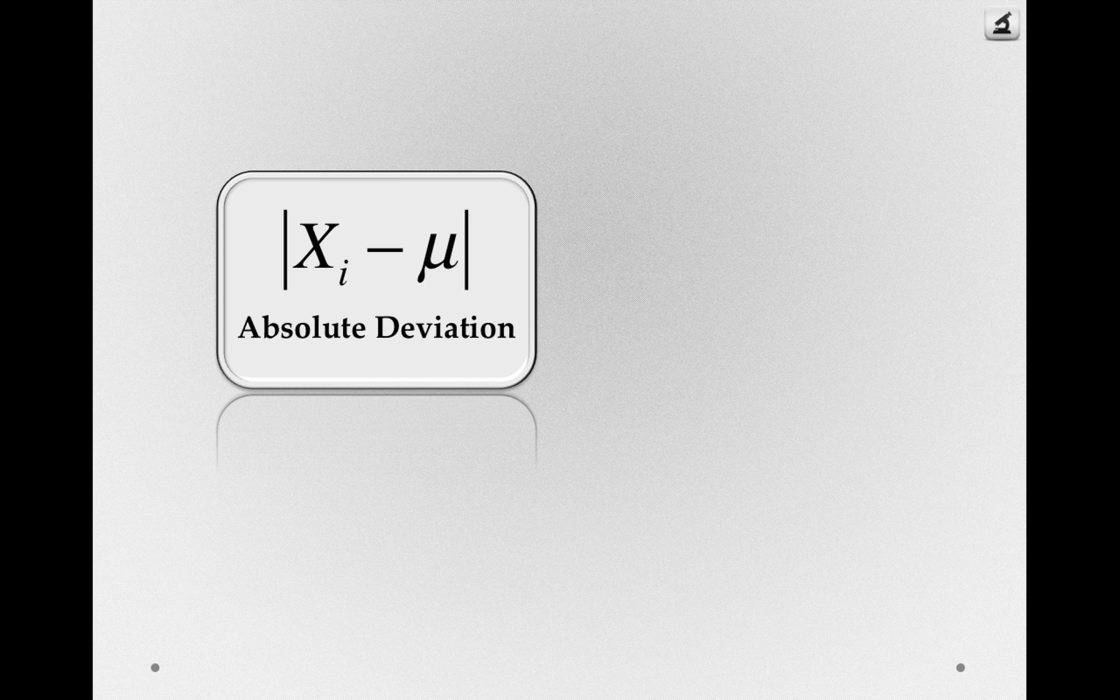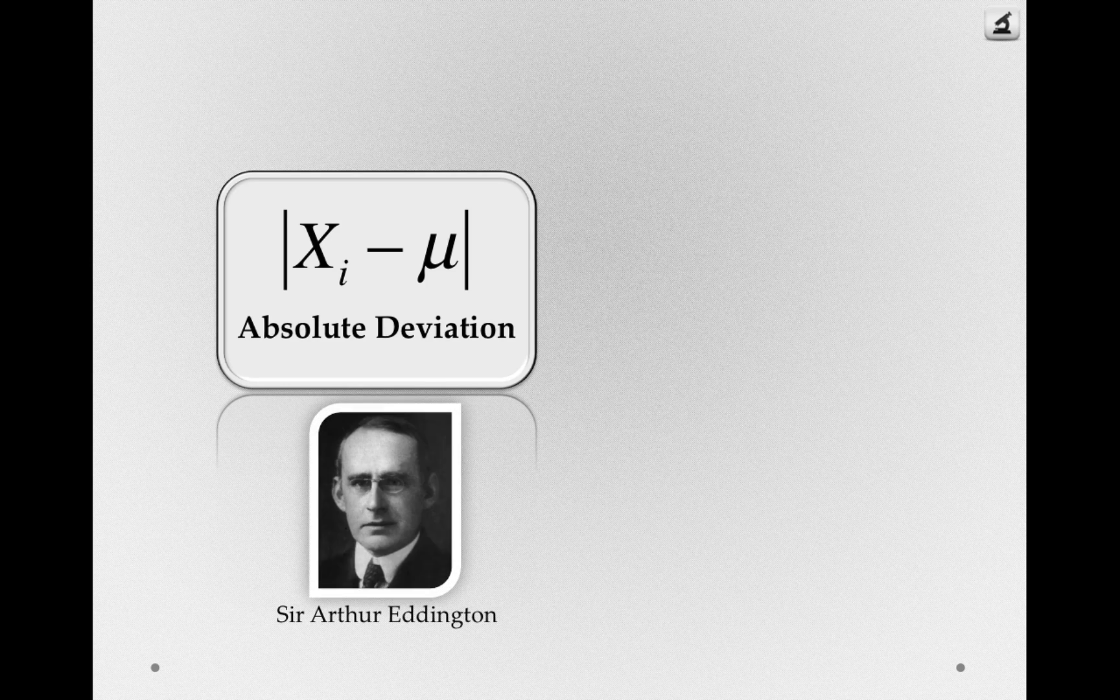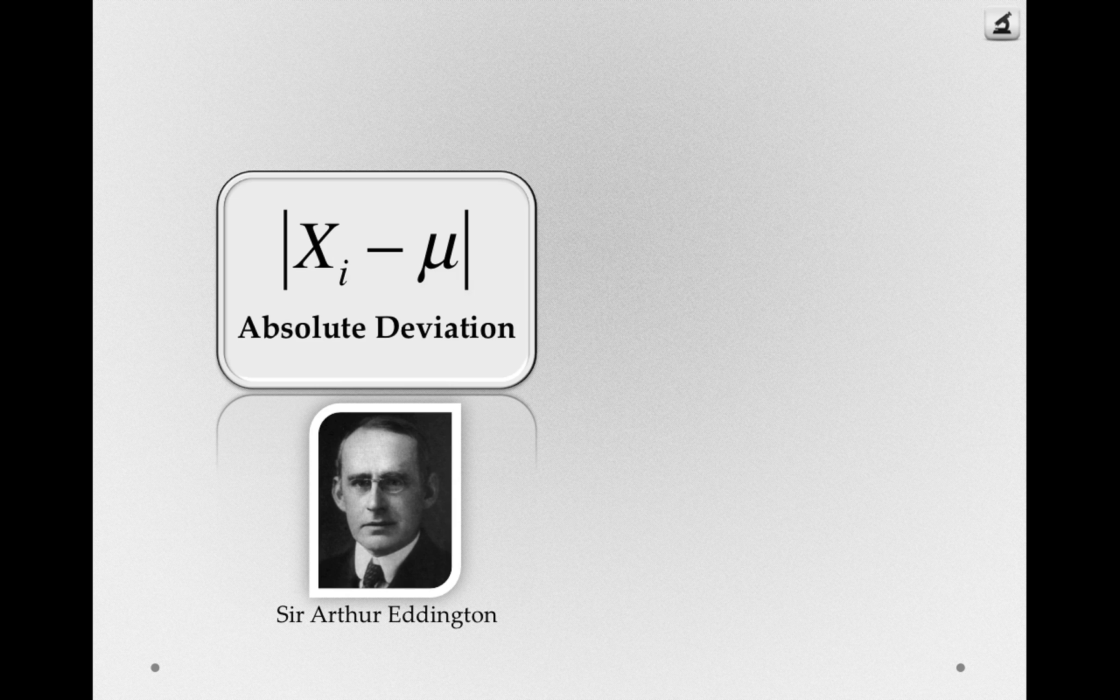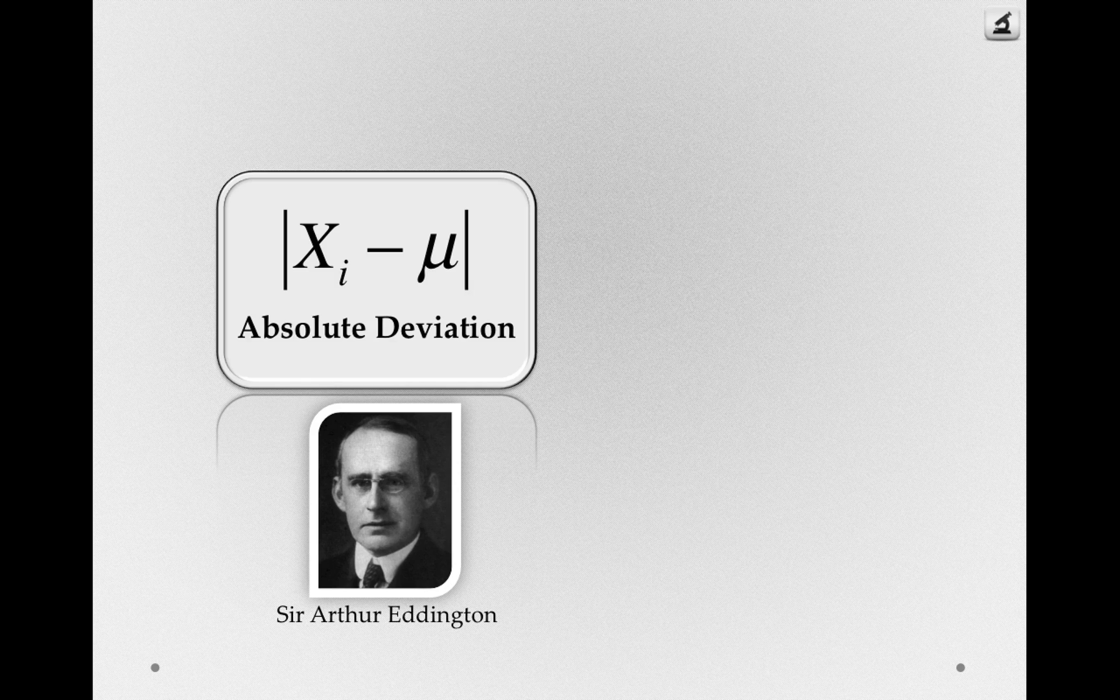Now it turns out that this was argued for quite strongly by somebody we've already met before, Sir Arthur Eddington. You might recall that he was the one who in 1919 actually observed the apparent shift in a star and confirmed Einstein's general theory of relativity. About five years earlier, in 1914, Eddington wrote about the absolute deviation and its use in statistics.